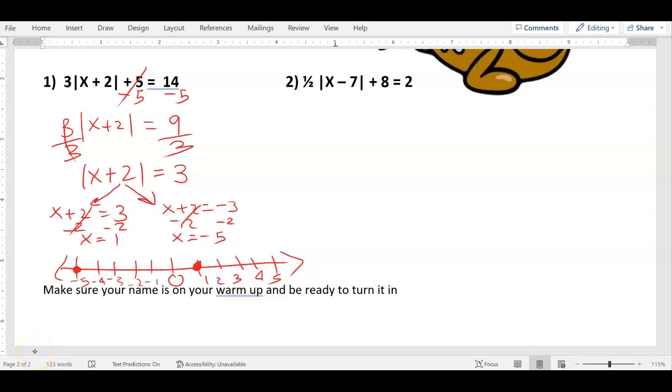Number two, same thing. Let's solve this. We want to get the bars by themselves. What do I do first to get the bars by themselves? Do I get rid of the one-half or the eight? Eight, because it's the loner. It's a positive, so what do I do? Subtract. So minus eight, minus eight. What's two minus eight? Negative six. Bring down one-half, and then x minus seven in the bars equals negative six.